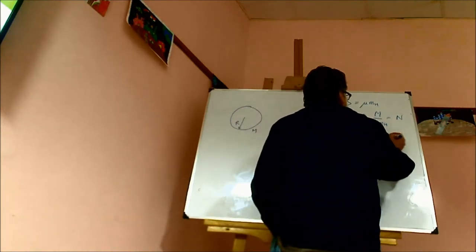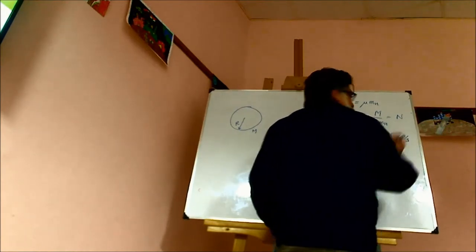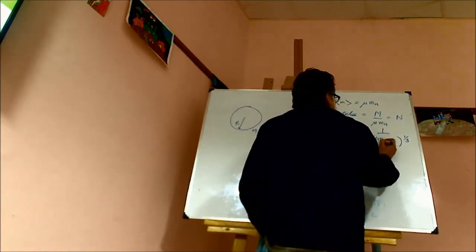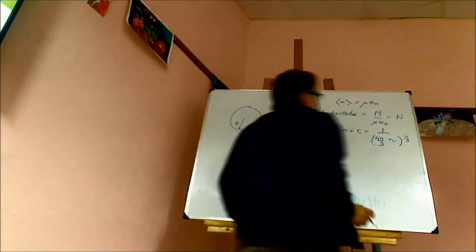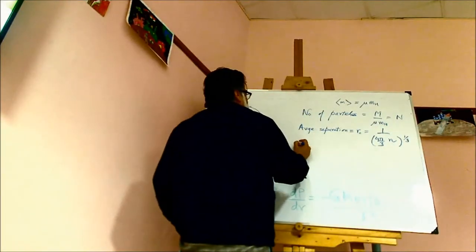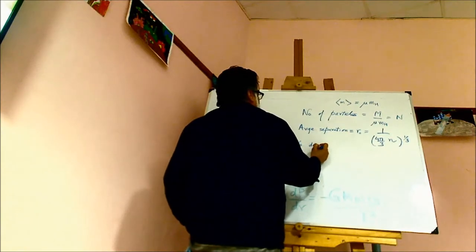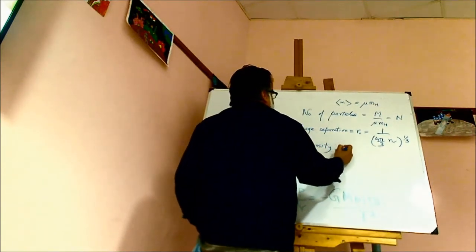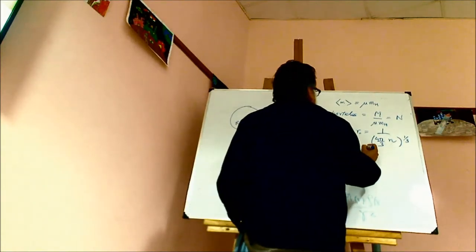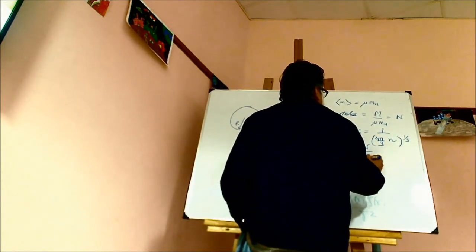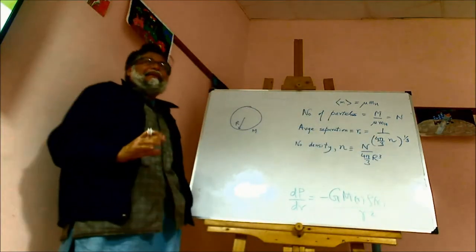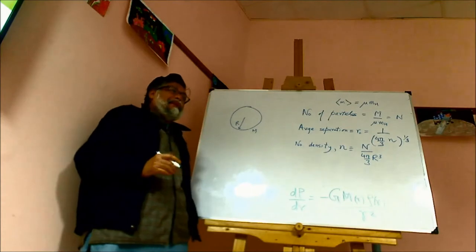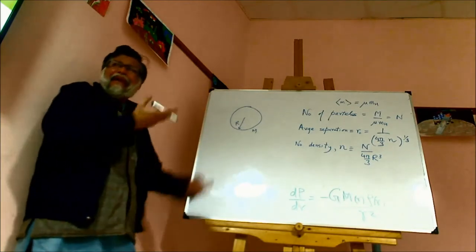R0 is roughly the cube root of 1 over the number density n, where the number density n is defined as the total number of particles divided by (4π/3) R³. This is the average number density, because we have assumed uniform distribution. In general for a star it is not uniform, but this gives us the average.